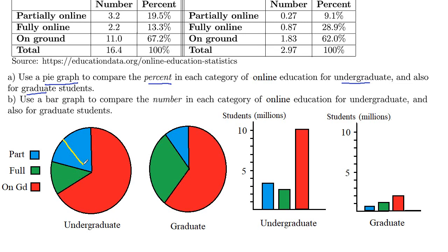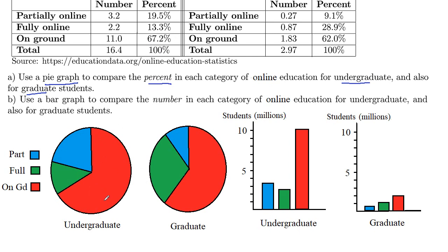Half of the blue would be about right there — so this green is just a little bit more than half of the blue. And then what's left, the 67% which is the on-ground, should be more than half of the circle, and it is. Half of the circle would be right here — we've got more than half.